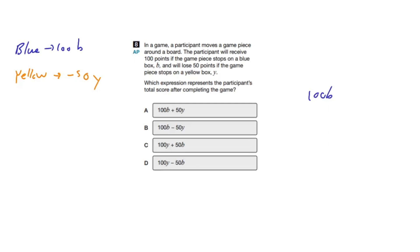And we're going to be losing 50, so let's subtract 50 if we land on a yellow box. The answer shouldn't involve addition with 50 — it should be 100B minus 50Y. It can't be 100 when you're on yellow, so it can't be A because you're adding it. So our answer is B. If you want to pause and try it yourself, go ahead, and then we'll move on to the next question.